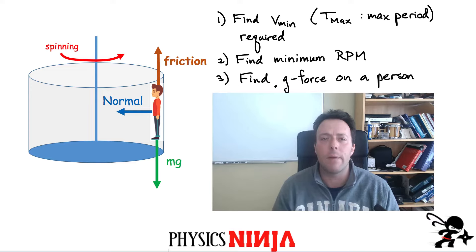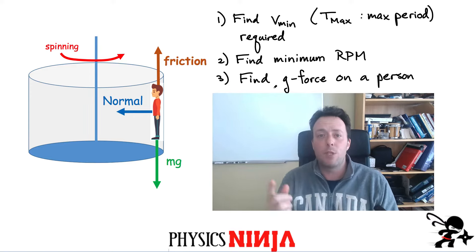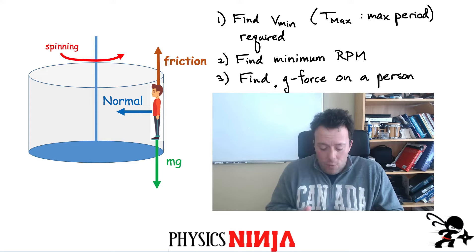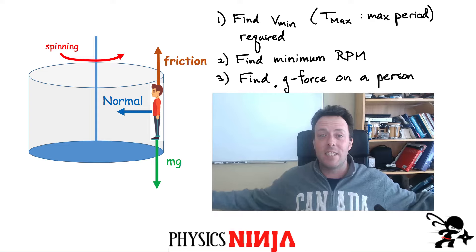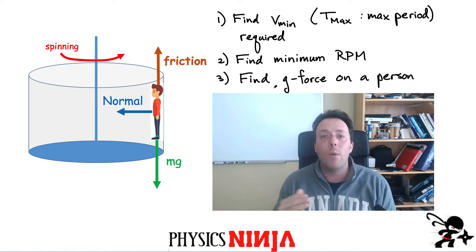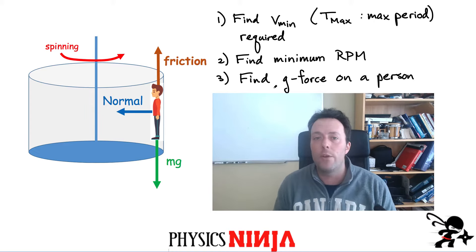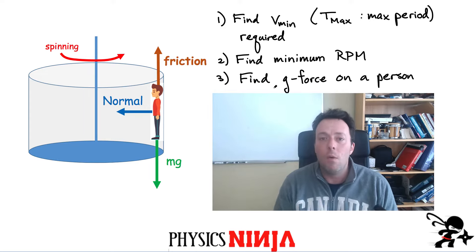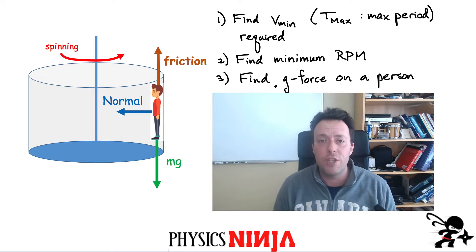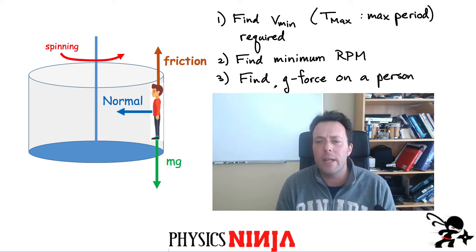We're going to look at the physics behind it, starting with the free body diagram, and I want to look at three basic questions. One, what is the minimum speed you have to spin before the person sticks to the wall? Another way to ask the same question: what is the minimum RPM required before you can lower the floor? And once you're spinning, what is the g-force acting on a person riding this ride?